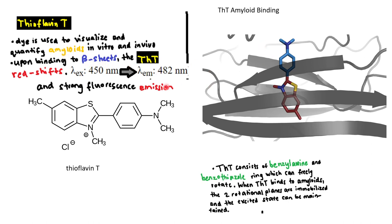Upon binding to the amyloids, thioflavin T strongly increases its fluorescence. And basically here in this rendering you have the benzylamine molecule here and the benzothiazole over here.